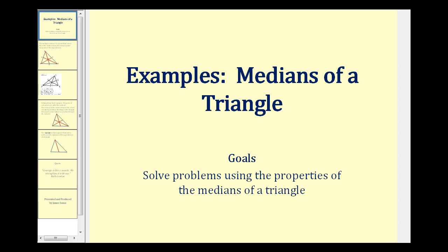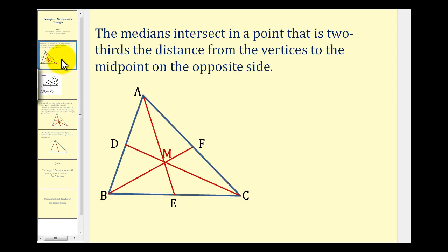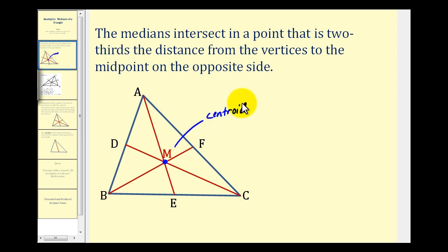Welcome to examples of using the properties of medians to determine unknown values. Before we take a look at our example, let's review the concurrency of medians theorem. This theorem tells us that the medians intersect in a point that is two-thirds the distance from the vertices to the midpoint of the opposite sides. This point of concurrency is called the centroid. So if we look at the median AE, this theorem tells us the length of AM is two-thirds the length of the entire median AE.